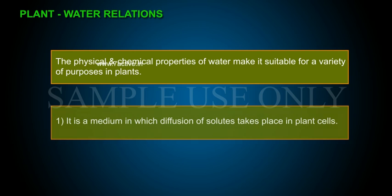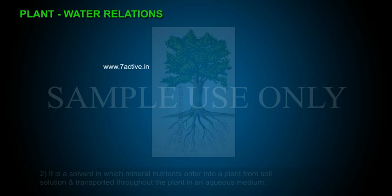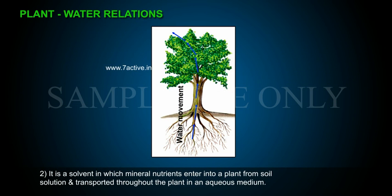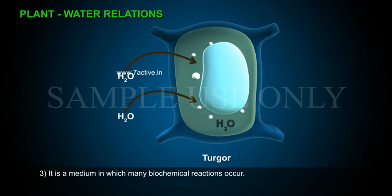The physical and chemical properties of water make it suitable for a variety of purposes in plants. First, it is a medium in which diffusion of solutes takes place in plant cells. Second, it is a solvent in which mineral nutrients enter into a plant from soil solution and are transported throughout the plant in an aqueous medium. Third, it is a medium in which many biochemical reactions occur.